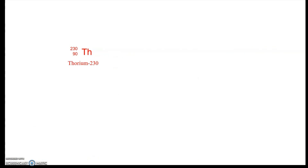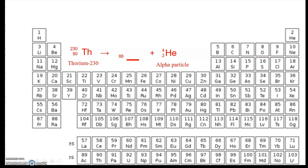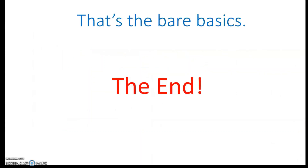Finally, thorium-230 breaks down into an alpha particle. What plus two equals 90? That's 88 — element 88 is radium. What plus four equals 230? That's 226. So we get radium-226. Something unexpected here is the presence of a gamma ray as well. Because gamma has no mass and no charge, it does not affect the math at all — it's actually good news, as it means less work.